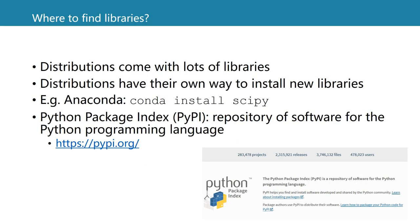So where can you find these libraries? Libraries come with distributions, and distributions have their own way to install new libraries. For example, in Anaconda, which we will use in this course, you use the command conda install followed by the name of the library — in this case, SciPy. You can find an overview of many libraries in the Python Package Index, a repository of software for the Python programming language that contains many projects.